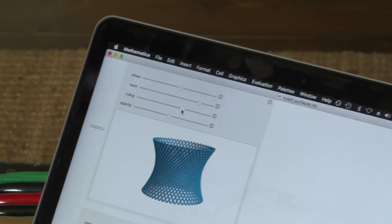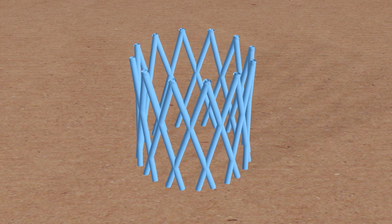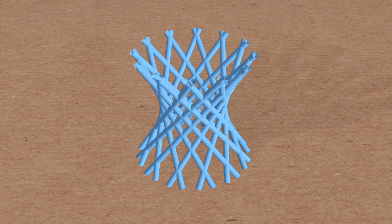These ones are doubly ruled so I can turn on the other ruling so here I have a set of crisscross lines and those will rotate together to form that curvature.